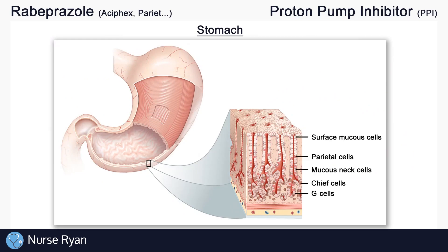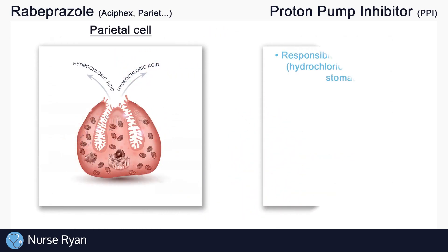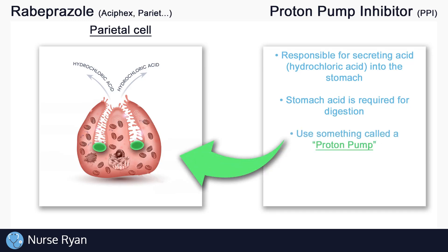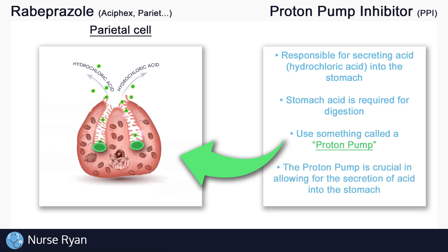In our stomach, we have lots of different types of cells. The ones that we're interested in today are called the parietal cells. The parietal cells are responsible for secreting acid into the stomach, and it's this acid that helps to break down food for digestion. Part of how the parietal cells secrete acid is by using something called a proton pump. The basics of what we need to know is that the proton pump is crucial in allowing for the secretion of acid from the parietal cells into the stomach.